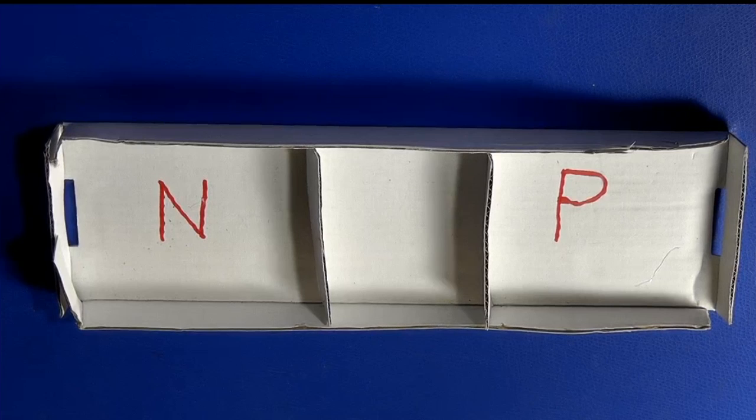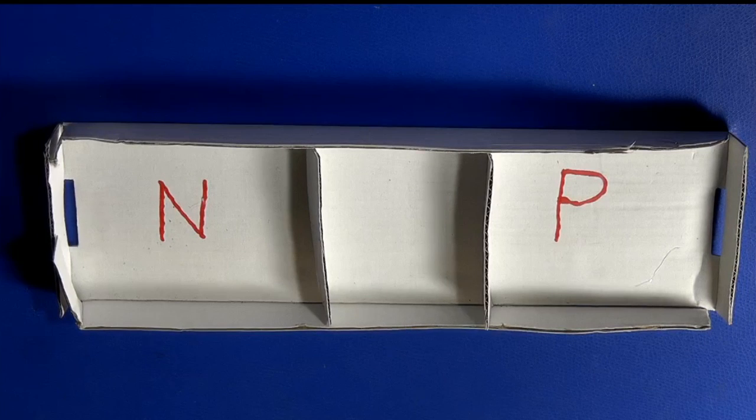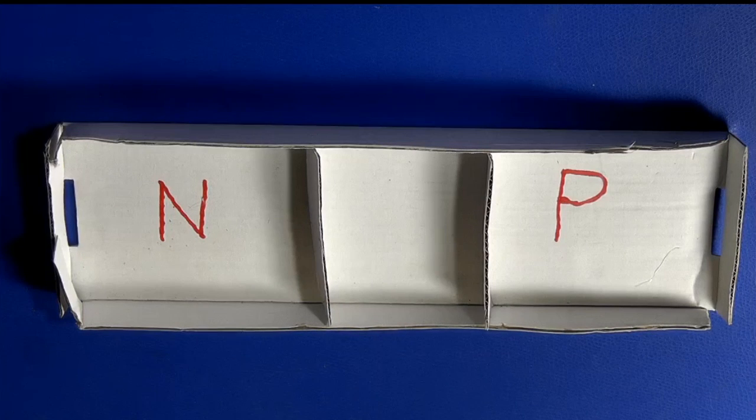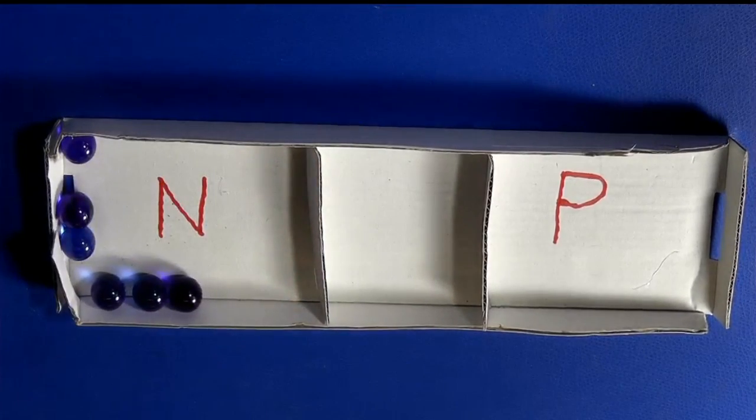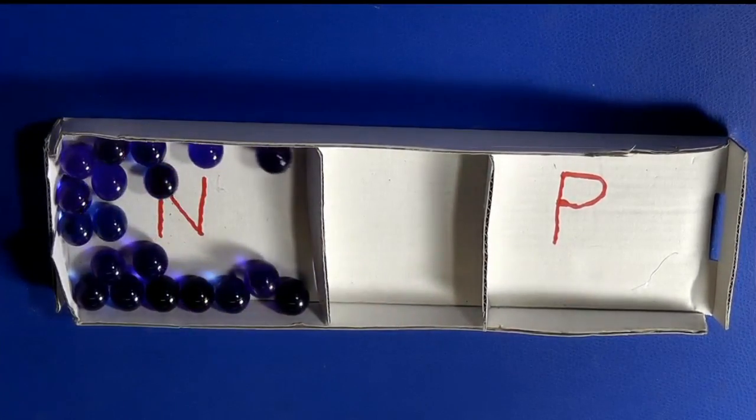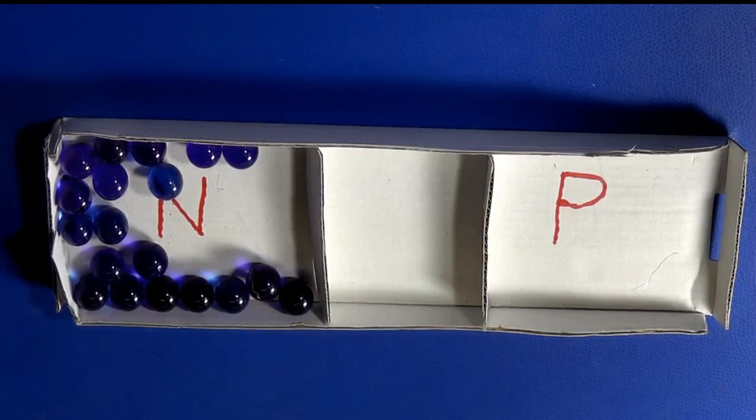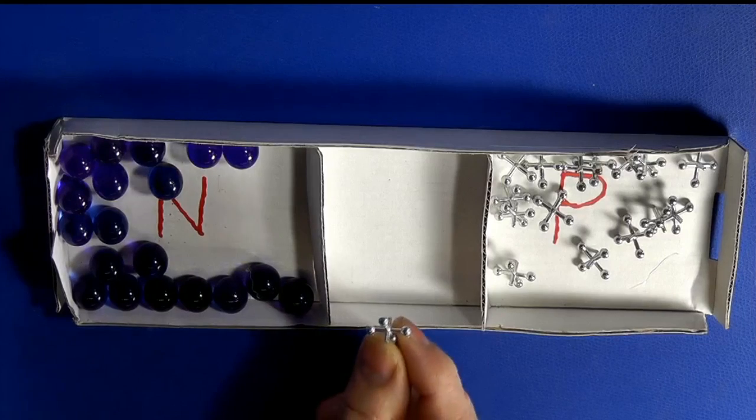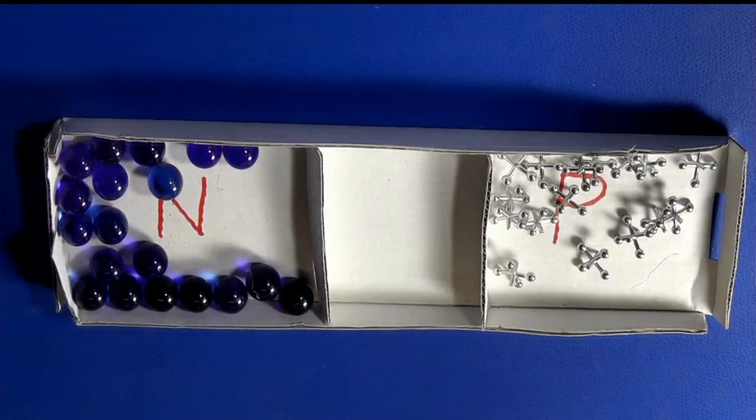In other words, a missing electron that has an affinity for trying to put an electron into that hole and becoming neutral. On the left we have lots of electrons represented by these marbles, and on the P side we've got jacks. You can see they even look like a little plus sign, right?